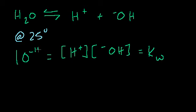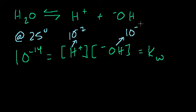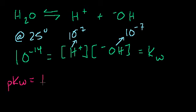We learned that Kw is 10 to the minus 14, because water by itself will have a hydrogen concentration of 10 to the minus 7 and a hydroxide concentration of 10 to the minus 7. And if you take the pKw — putting a 'p' in front of something means you're taking the negative log of it — the negative log of 10 to the minus 14 gives us pKw equals 14.